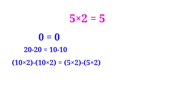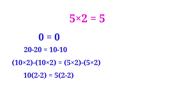Now, on the left side 10 is common, and on the right side 5 is common. So we can take out the common terms. Then we can write this as 10 into (2 minus 2) is equal to 5 into (2 minus 2).